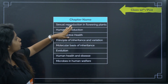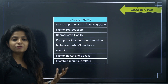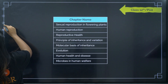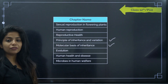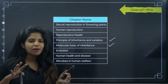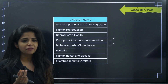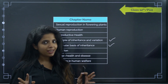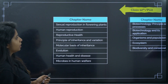The 12th syllabus goes from sexual reproduction in flowering plants up to human reproduction, microbes in human welfare, and several other important chapters. Principles of inheritance and variation is something really new you'll be studying. Molecular basis of inheritance is also something new in 12th grade. The other topics you may have covered in 8th, 9th, or 10th in some form, but these genetics chapters will be especially interesting.